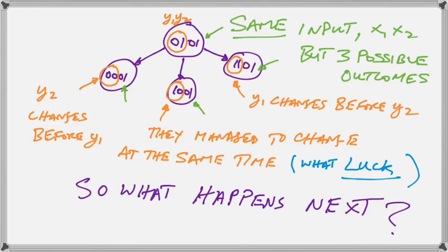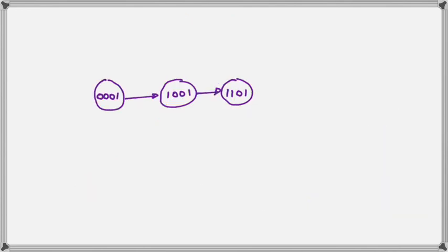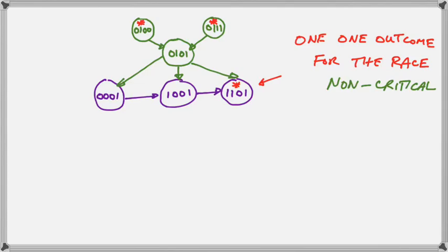What happens next? We see that square 0001 goes to 1001, which goes to 1101. When we put back what we had before, we get our total diagram for the races in this transition table. We see that there is only one possible outcome of the race, and that is indicated. When there is only one possible outcome, the race is said to be a non-critical race.